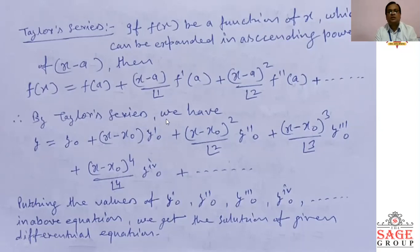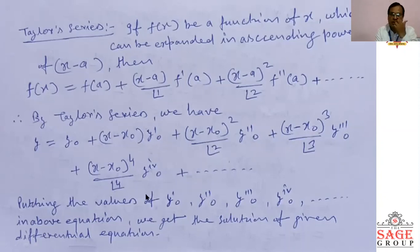Therefore, by Taylor series, we have: y = y-naught + (x − x-naught)·y'(naught) + (x − x-naught)²/2! · y''(naught) + (x − x-naught)³/3! · y'''(naught) + (x − x-naught)⁴/4! · y''''(naught) + and so on. From this equation we get the solution of the given differential equation.